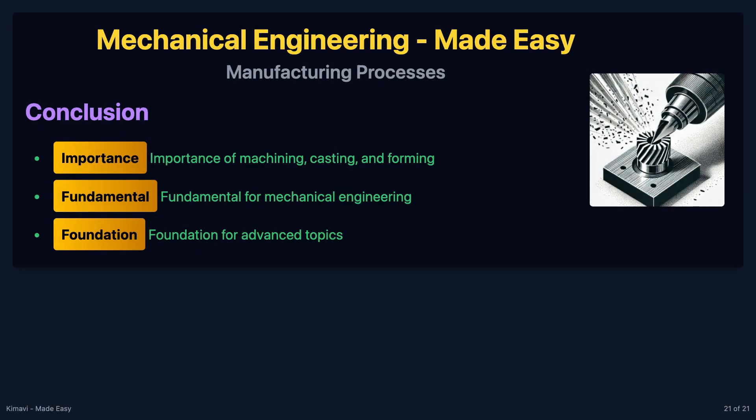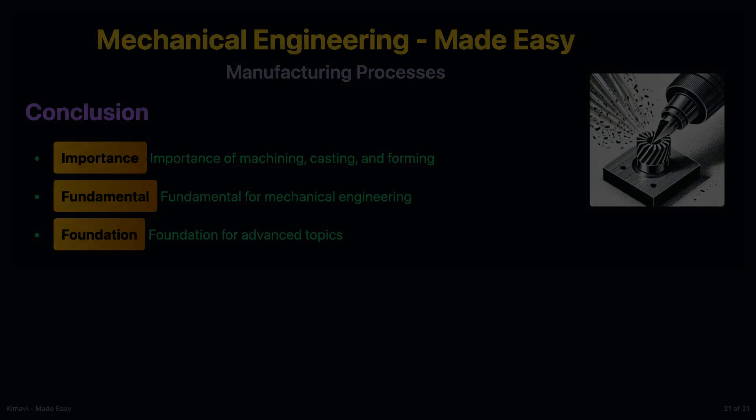Understanding machining, casting, and forming processes is fundamental for mechanical engineering students. These processes are crucial in manufacturing a wide range of products with different shapes, sizes, and materials. Mastery of these concepts will provide a solid foundation for more advanced topics in manufacturing engineering.